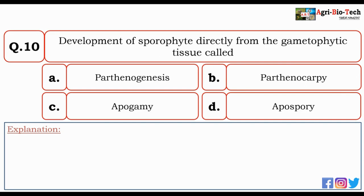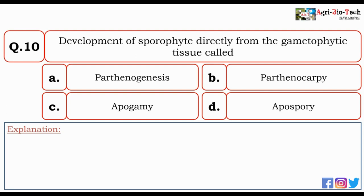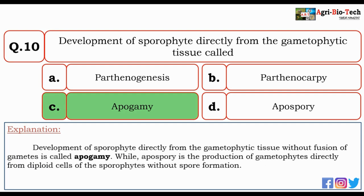Next question: development of sporophyte directly from gametophytic tissue is called — Parthenogenesis, Parthenocarpy, Apogamy, or Apospory? The correct answer is C — Apogamy. Development of a sporophyte directly from gametophytic tissue without fusion of gametes is called Apogamy, while Apospory is the production of gametophytes directly from diploid cells of the sporophyte without spore formation.